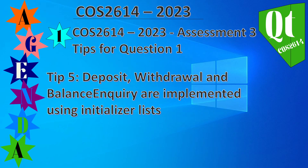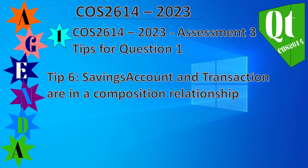Tip five: deposit, withdrawal, and balance inquiry are implemented using initializer lists. Tip six: savings account and transaction are in a composition relationship, so that's something else to read up about.